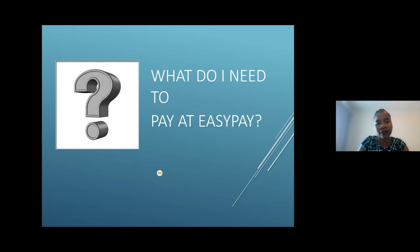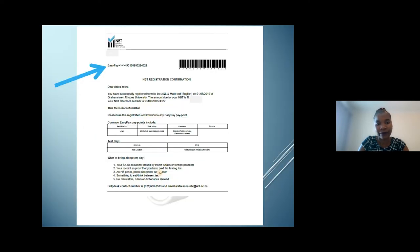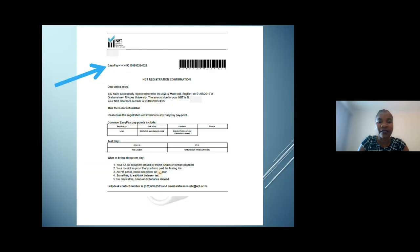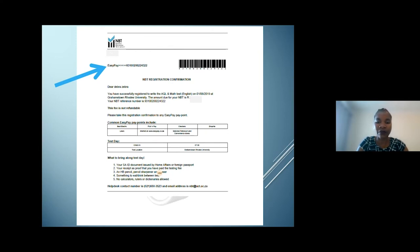To pay at EasyPay, download your proof of registration. Your proof of registration will show your EasyPay number, which is also your NBT reference number. Take this to an EasyPay partner to pay. Please note you can also do EFT — all our payment details are on our website.